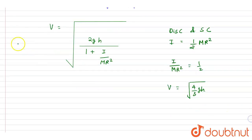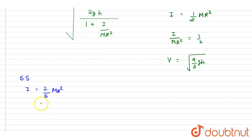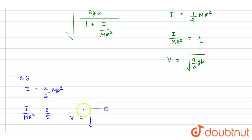For a solid sphere, the moment of inertia is 2 by 5 mr squared, so I by mr squared equals 2 by 5. The denominator becomes 1 plus 2 by 5, which is 7 by 5. So velocity equals the square root of 2gh divided by 7 by 5, giving the square root of 10gh by 7.